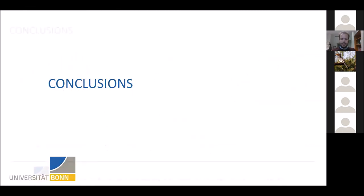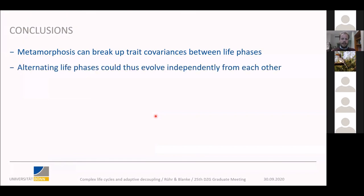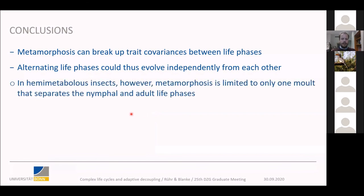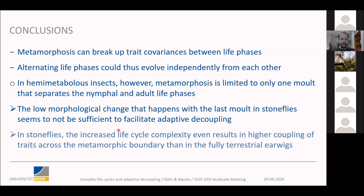That leaves me with the conclusions. We know from the literature that metamorphosis can break up trait variances between life phases, allowing alternating life phases to evolve independently. However, in hemimetabolous insects, metamorphosis is limited to only one molt separating the nymph from the adult life phase. We find that the low morphological change that happens with this last molt in stoneflies does not seem sufficient to facilitate adaptive decoupling. Rather, increased life cycle complexity results in a higher coupling of traits across the metamorphic boundary in stoneflies than we find in the fully terrestrial earwigs.